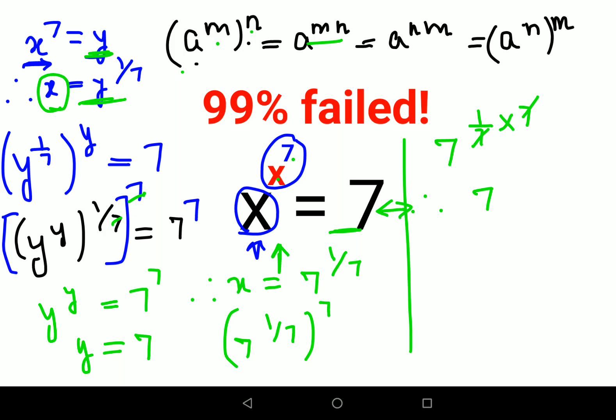Therefore, I can say that the value of x for this particular question is nothing but 7 raised to 1 upon 7. I hope this is very very clear to everyone. That's it for today.